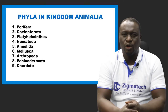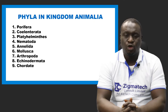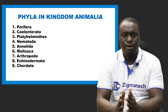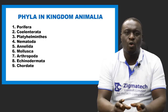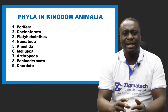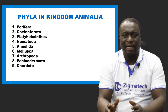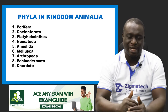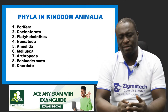The first phylum is Porifera. Number two is Coelenterata. Number three is Platyhelminthes, also referred to as flatworms. Number four is Nematoda, another name for which is roundworm. Number five is Annelida, another name for which is segmented worm. Number six is Mollusca. Number seven is Arthropoda. Number eight is Echinodermata. And number nine, the last phylum, is Chordata. We're going to look at each of them and see examples of organisms found there and their characteristics.